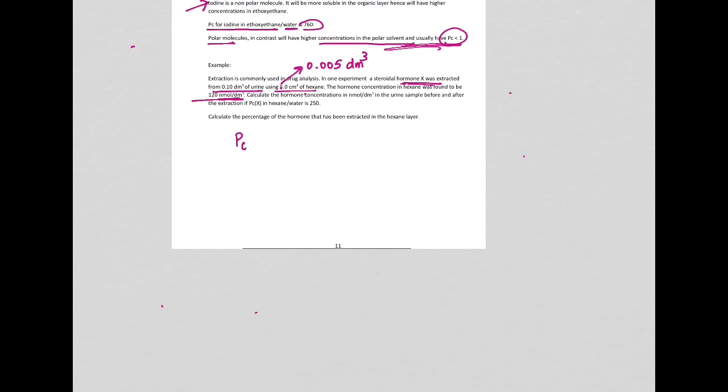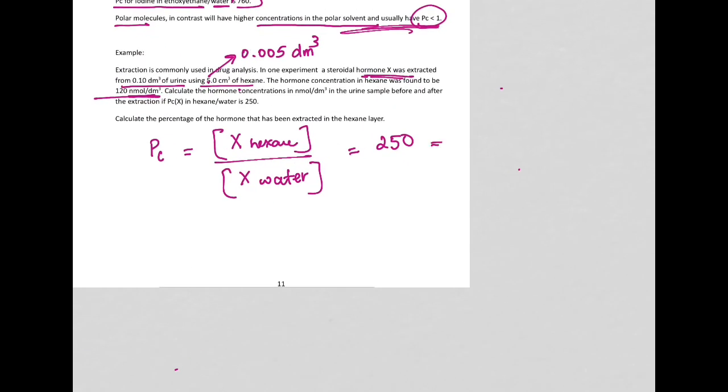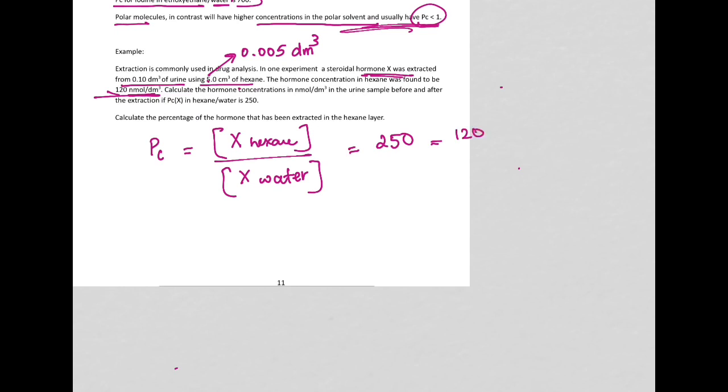So if we use PC, hexane to water, we're going to have X concentration in hexane over X concentration in water. And this is given as 250. So X in hexane is already given as 120. And concentration of X in water, we can calculate it. And if you do this, you get 0.48 nmol per dm³.